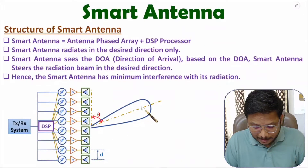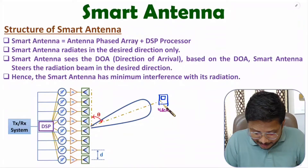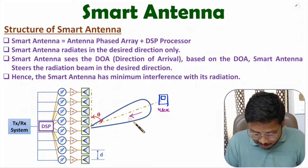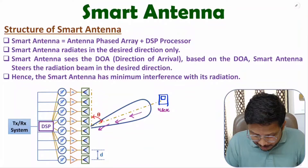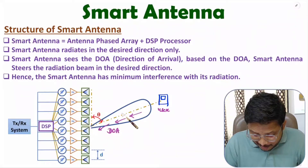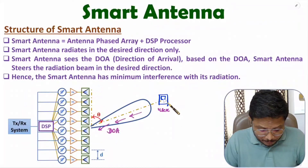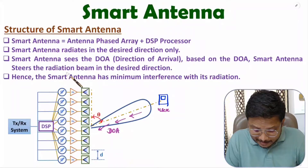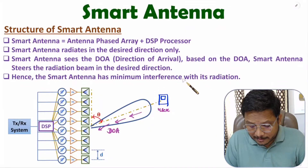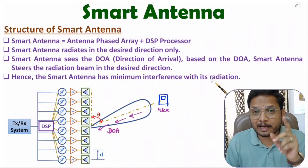This smart antenna structure radiates in the desired direction only. For example, if we have a user, that user gives a direction of arrival signal to the smart antenna structure. The smart antenna identifies the direction of arrival and based on that it radiates in the desired direction only. That is why smart antenna has minimum interference with its radiation. Smart antenna technology is a combination of phased antenna array along with a DSP processor.